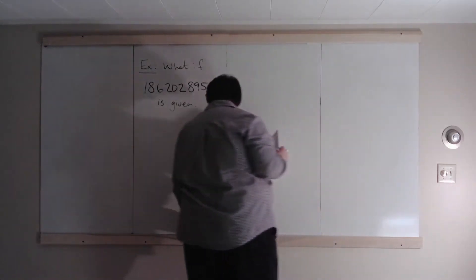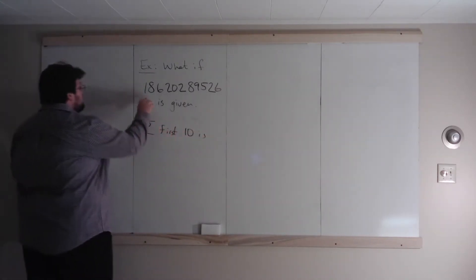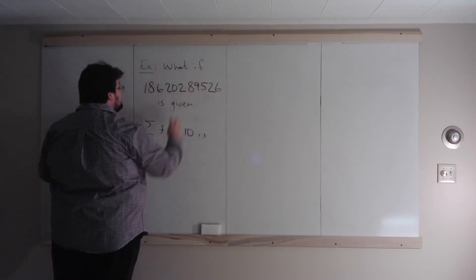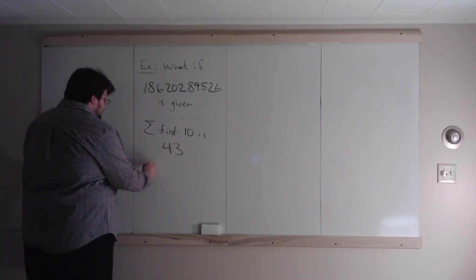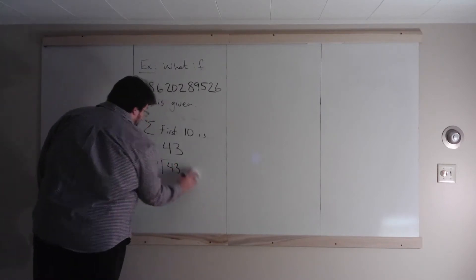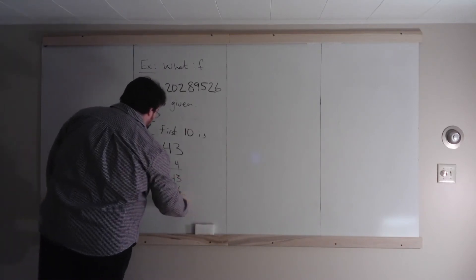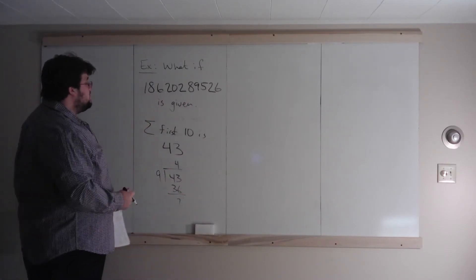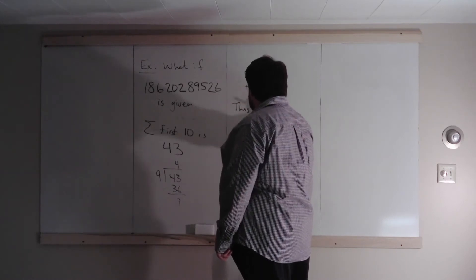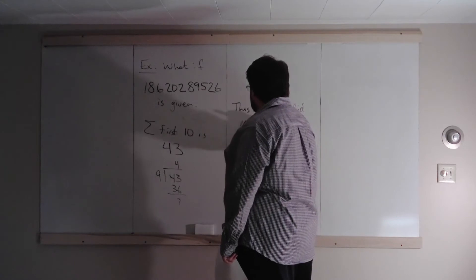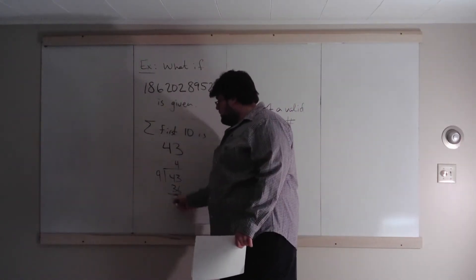The sum of the first 10 is: 1 plus 8 plus 6 is 15, plus 4 is 19, plus 17 is 36, plus 7 is 43. Sum of the first 10 is 43. 9 into 43 gives 4 with a remainder of 7 — 4 times 9 is 36, subtract to get 7. So this is not a valid money order number. Given the first 10 digits, the last digit should be 7.